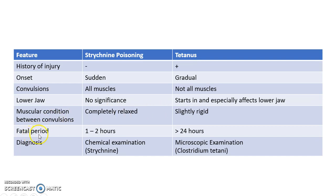The fatal period in case of Strychnine poisoning is only 1 to 2 hours, whereas in case of tetanus it is greater than 24 hours.